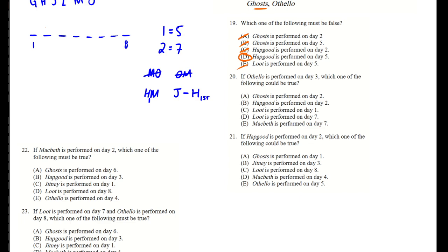If Othello is performed on day three, which of the following must be true? We put O on day three and see what has to happen. What we know about O is that it can't have M coming before or after it. So E cannot be true, because if M is on day seven, that also means M is on day two, and that's an issue. If Loot is on day one, let's consider Ghosts on day two — we don't really have too many restrictions happening there.